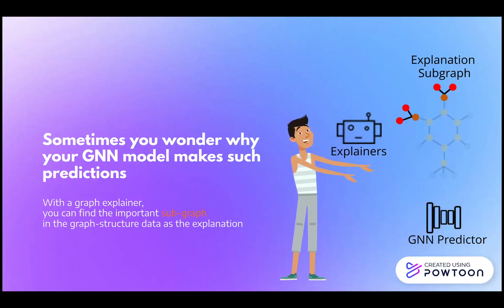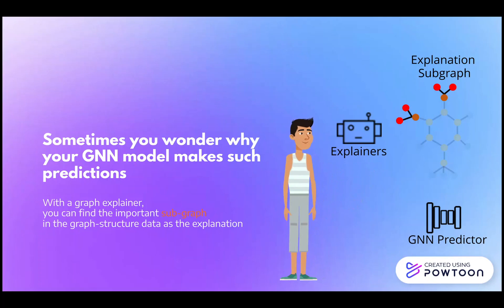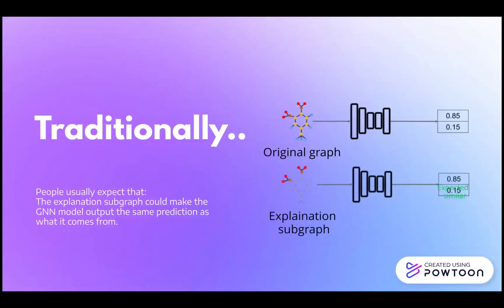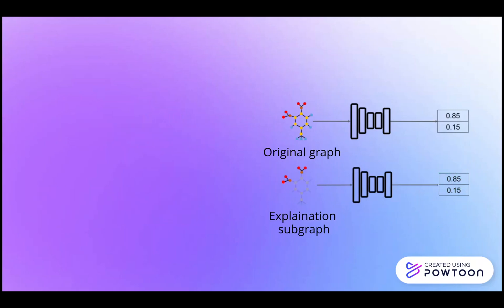For example, consider the prediction of mutagen density given a chemical structure. This property usually depends on substructures like NO2 or NH2. Traditionally, it is assumed that the presence of NO2 or NH2 alone would decide the predicted labels from GNNs.